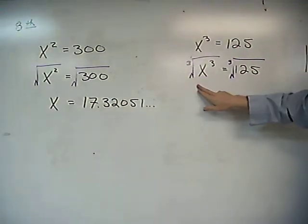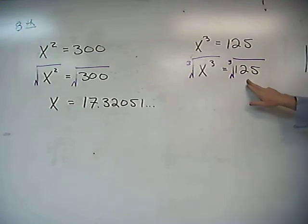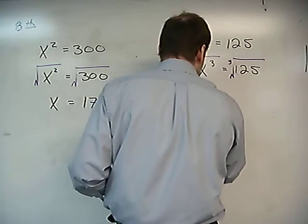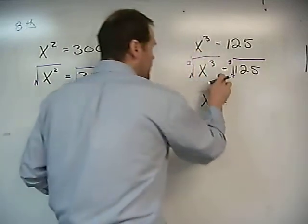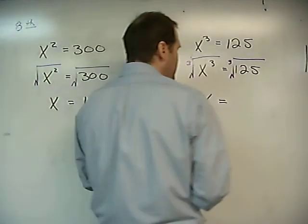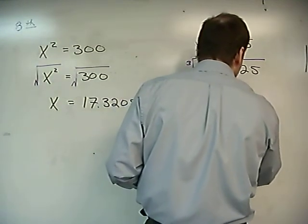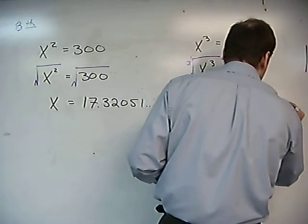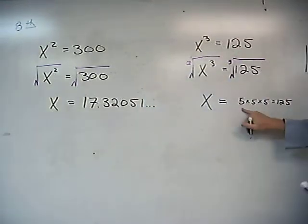Taking the cube root of x cubed, taking the cube root of 125. Looking at this, this is just going to give us our x. Looking over here, cube root of 125, you guys might figure out, and you probably already have, that 5 times 5 times 5 is equal to 125.